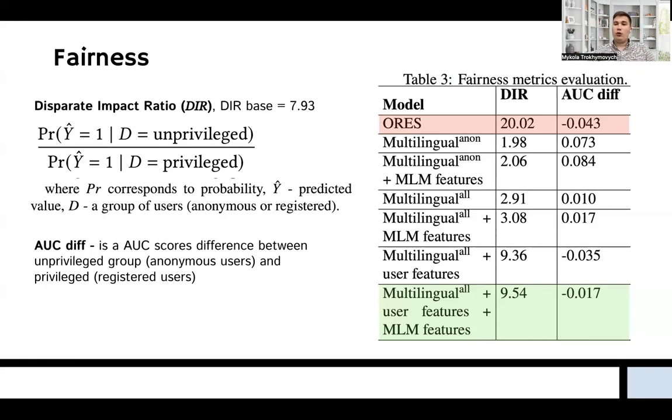However, we should say that is still not the same and a little bit higher, meaning we still introduce minor bias against anonymous users. However, that is much smaller than for the previous iteration of the models.